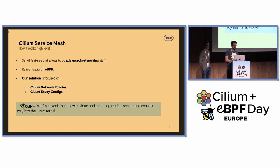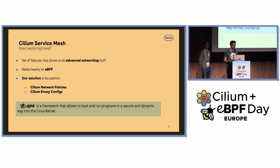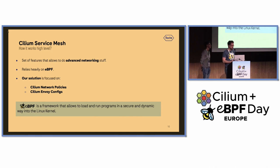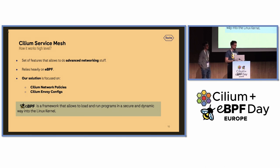Let's step back and revisit what Cilium service mesh is for those less familiar with it. Cilium service mesh is, put simply, a set of features that allows advanced networking stack capabilities. It relies heavily on eBPF, a framework that allows loading and running programs in a secure and dynamic way into the Linux kernel — essentially extending the Linux kernel on the fly. For our solution, we are using two features from Cilium service mesh: Cilium network policies and Cilium Envoy configs.